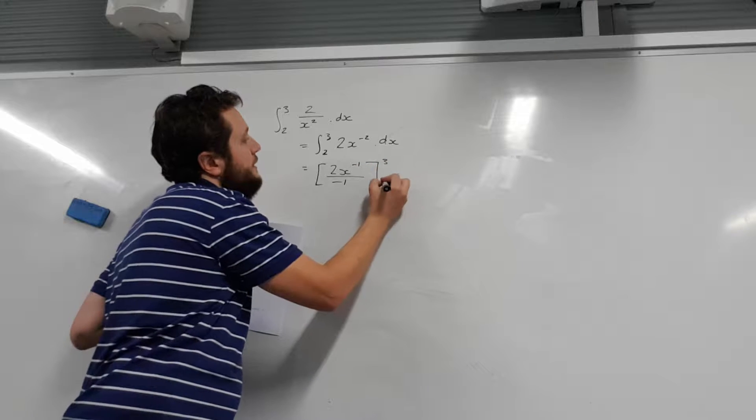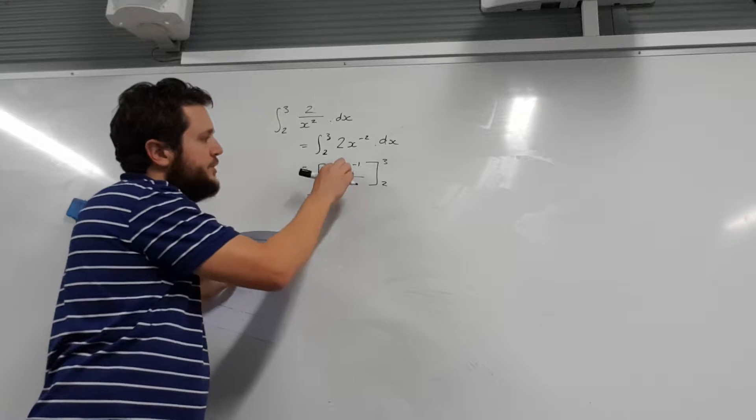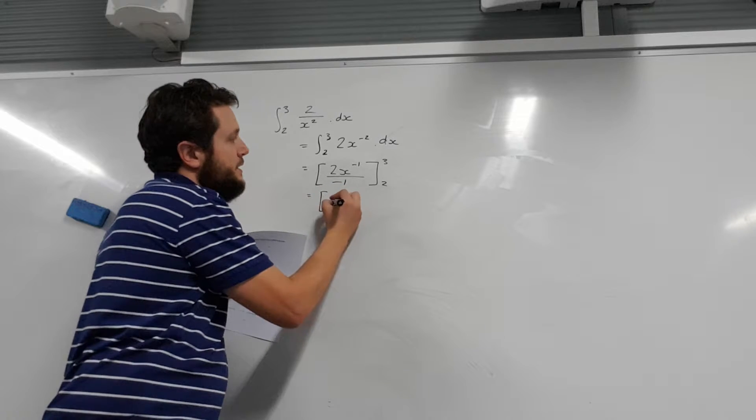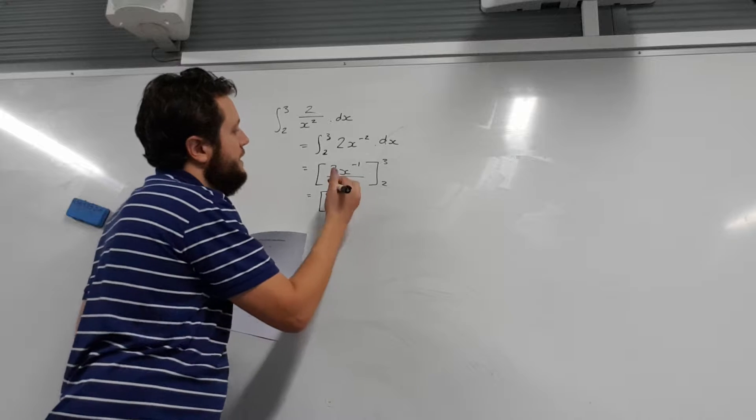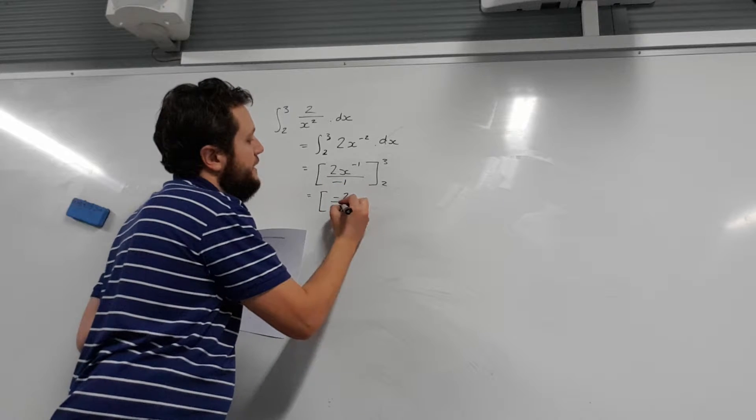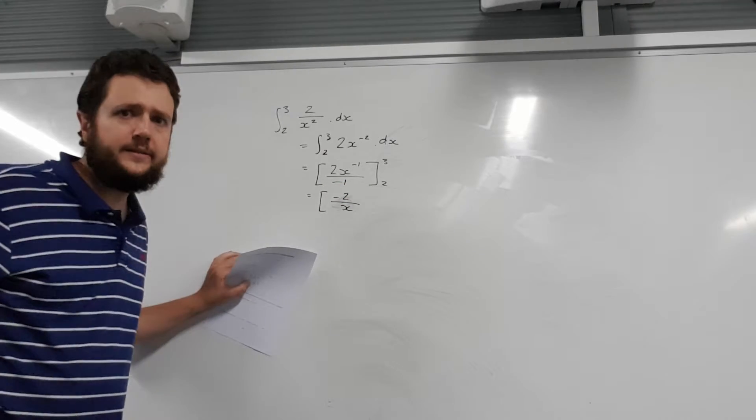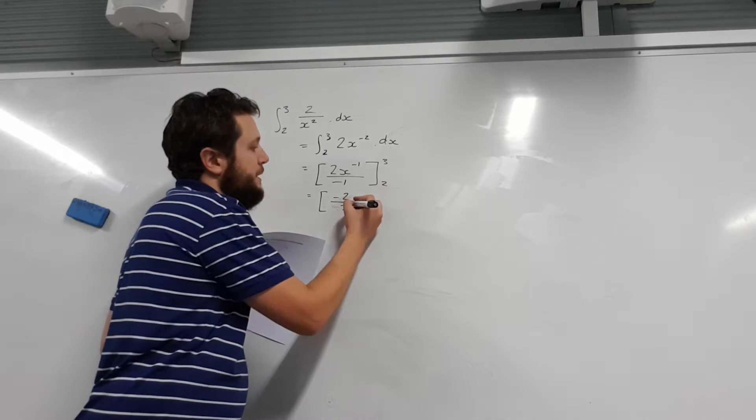It's a bit weird. Let's clean that up a bit. So 2 divided by negative 1 is just negative 2. Actually, even better. Negative 2 and x to the negative 1 means just an x on the bottom. x to the power of 1.